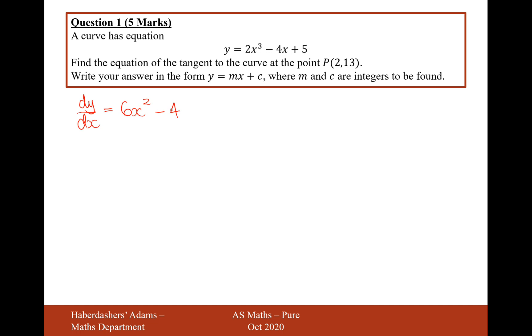The next thing we need to do is this now calculates the gradient for us at any point x that we choose. So what I'm now going to do is I'm going to substitute in x equals 2, and that will work out what the gradient of the graph is for me.